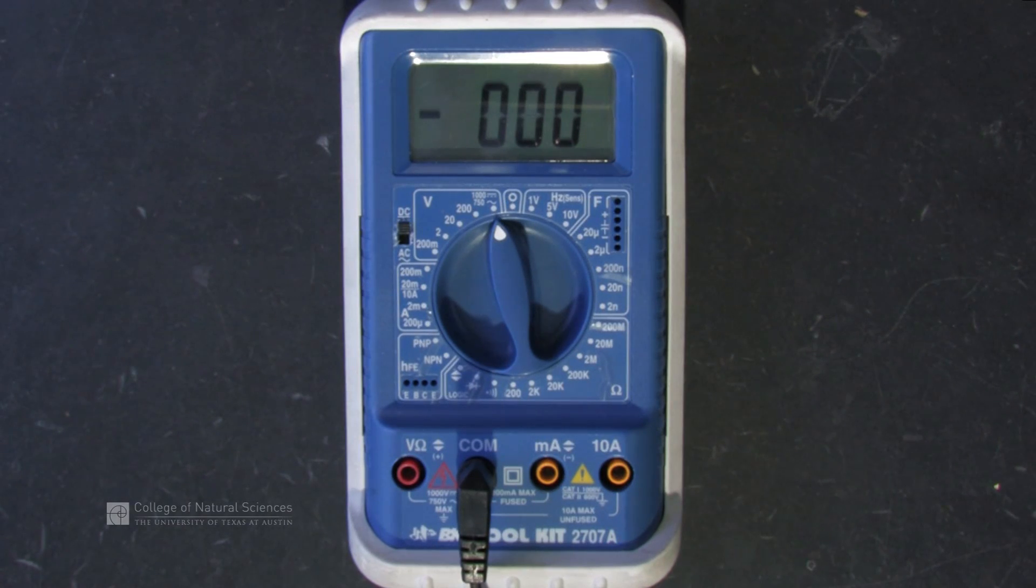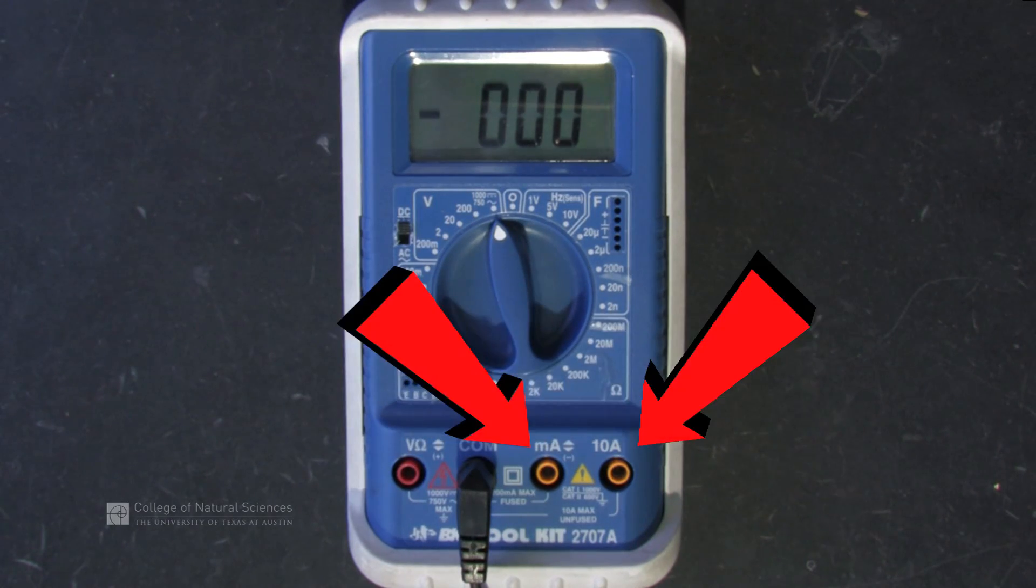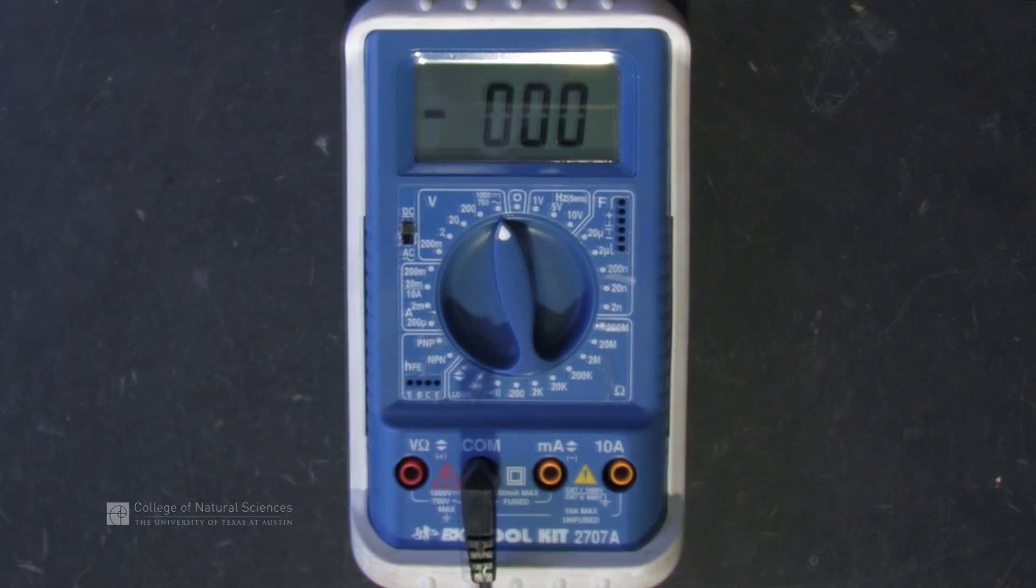Now plug in the red probe to the correct port. If you're measuring voltage or resistance, use the V and Omega port. If you're measuring current, then you'll use one of the two current ports labeled with an A. Since we are measuring voltage in this case, we plug into the voltage resistance port.